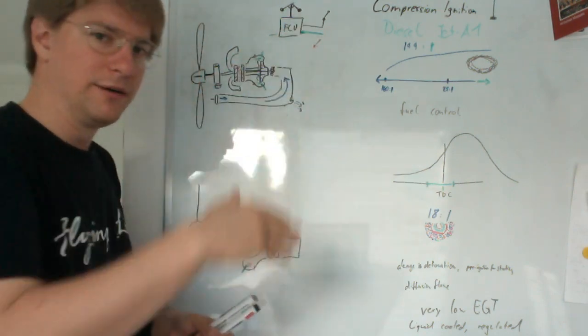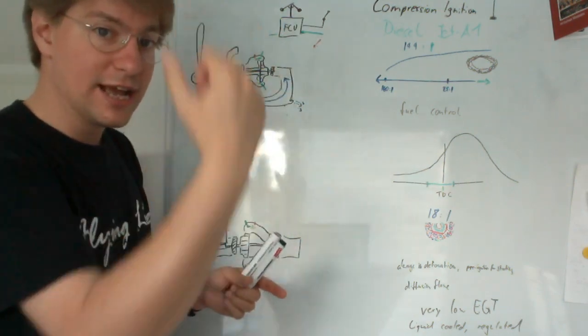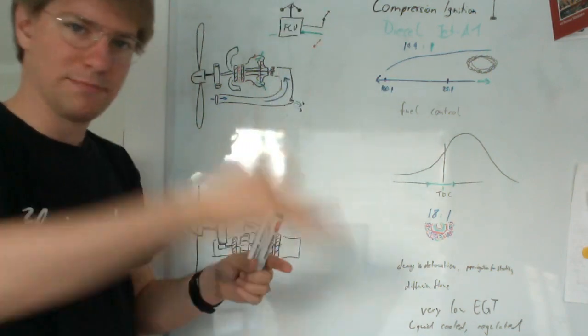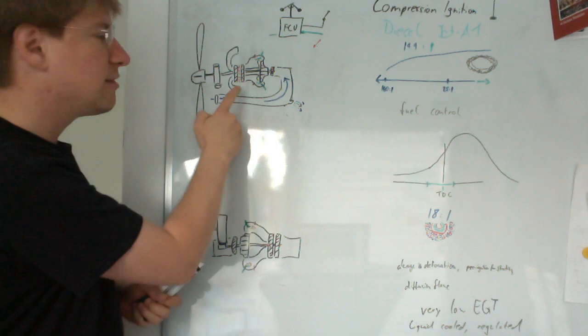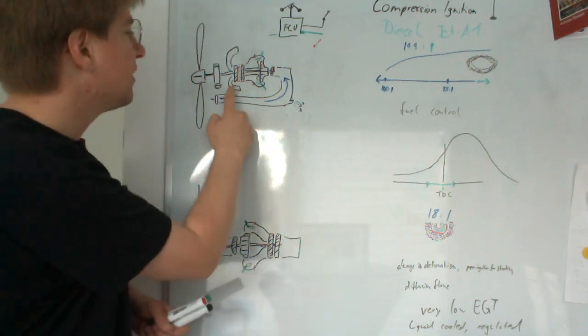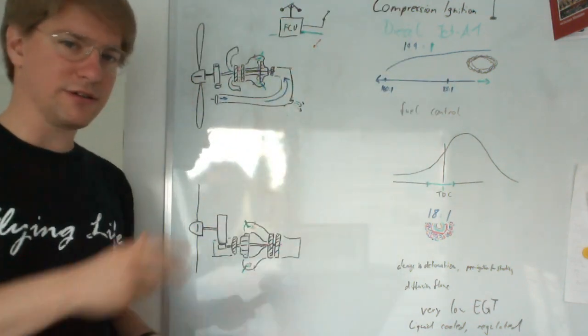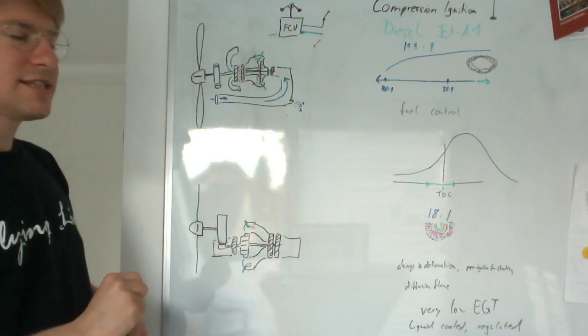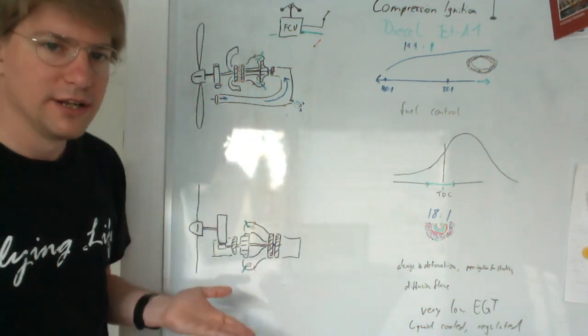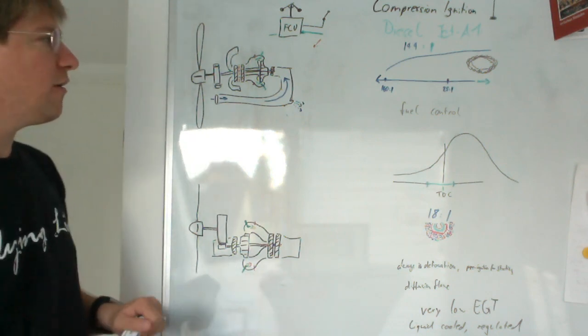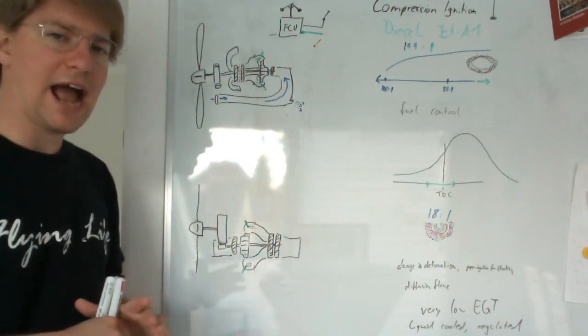In the diesel engine, the exhaust opens, the piston comes back up and dumps all the exhaust gases overboard. In the turboprop, there's no exhaust valve, just the tube that goes out, and the combustion gases after they have spun the turbine wheels are dumped overboard.